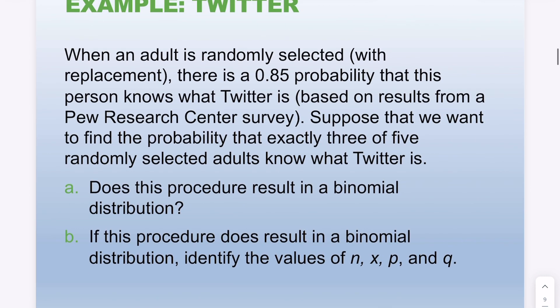Here is an example: when an adult is randomly selected with replacement — so these are independent trials — there is a 0.85 probability that the person knows what Twitter is, based on a result from the Pew Research survey, clearly before Twitter became X. Suppose that we want to find the probability that exactly three of five randomly selected people will know what Twitter is.